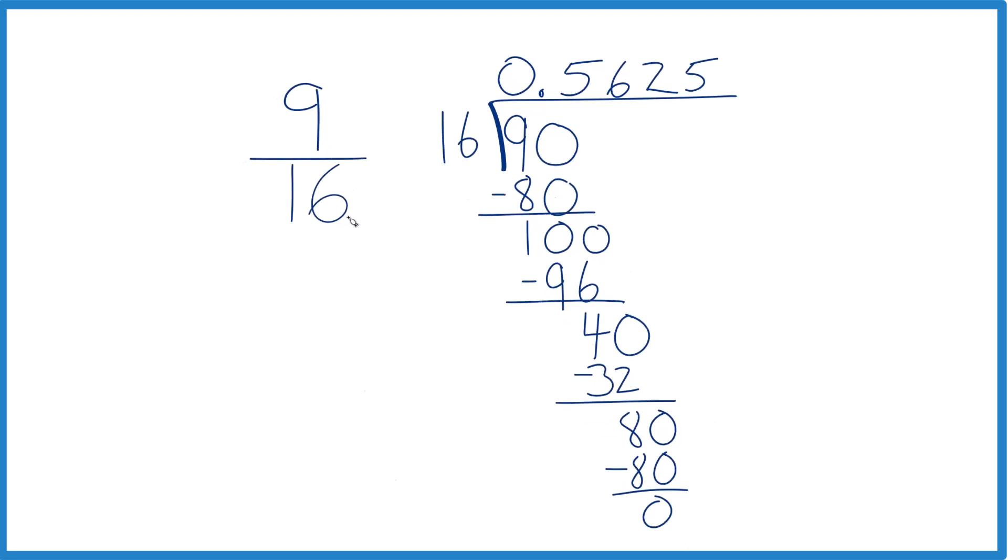When we take the fraction 9 sixteenths, we convert that to a decimal, we get 0.5625, and that's an exact number. This is Dr. B, writing 9 sixteenths as a decimal, and thanks for watchin'.